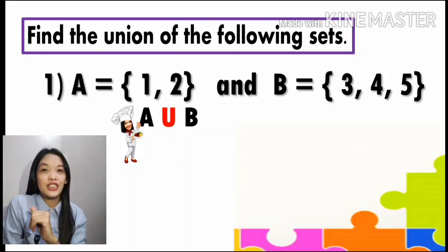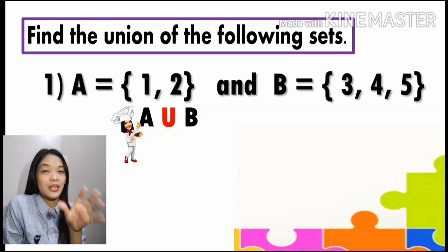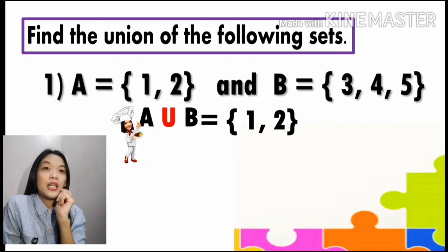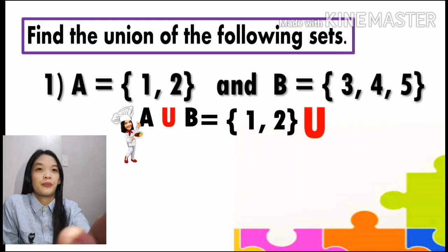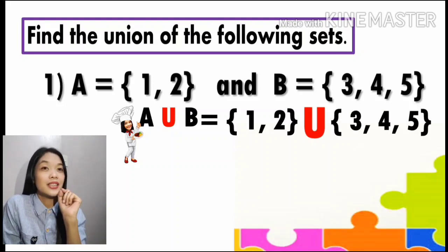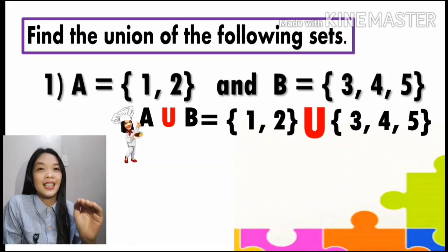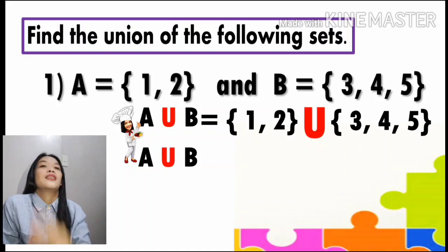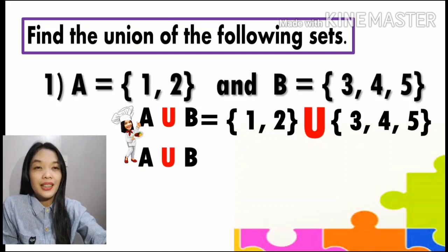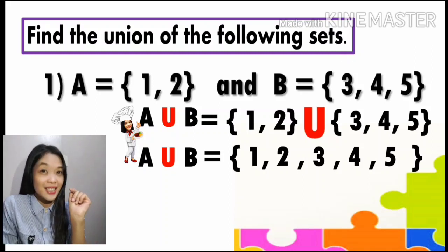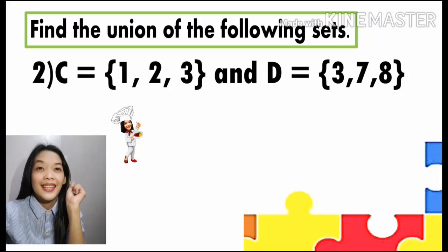Remember from its definition you need to combine the elements. What are those elements that we're going to combine? We have the elements in A: one and two, then the symbol for the union, then write the elements of B which are three, four, and five. So once again, combine the elements. Therefore A union B will be one, two, three, four, and five. That's all — it's easy, right!